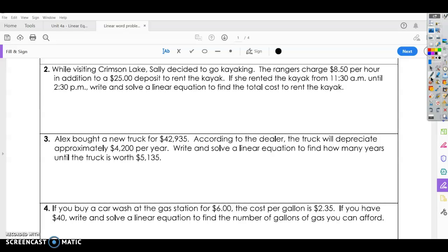Let's look at number two. While visiting Crimson Lake, Sally decided to go kayaking. The rangers charge $8.50 per hour, so that's our change, that's our slope. And a deposit of $25, so that we have to pay. She rented the kayak from 11:30 until 2:30. So let's first look at our slope and our y-intercept. Our slope is what happens per hour, so that's going to be our $8.50 because they charge $8.50 per hour. And then our y-intercept, that's our starting point, so we have to start by paying the $25.